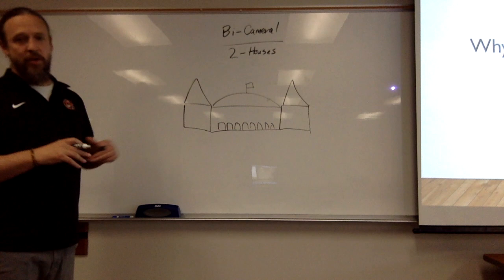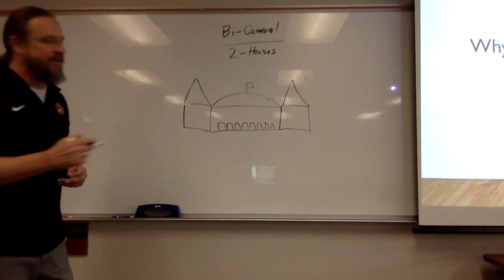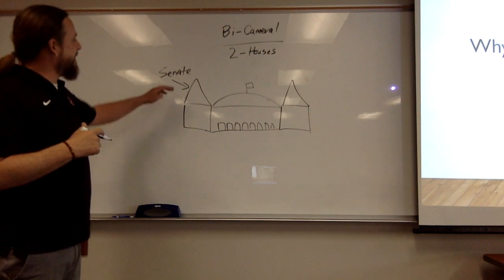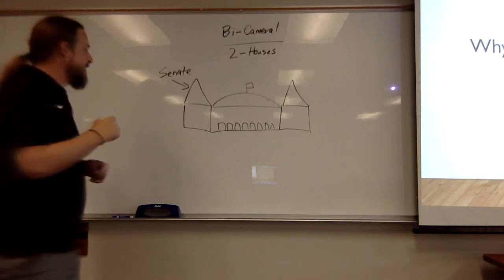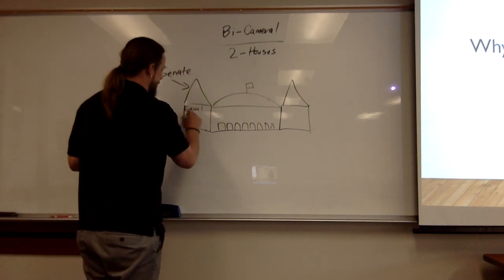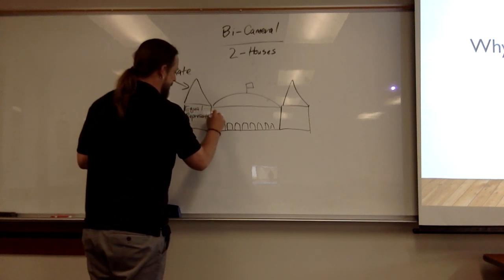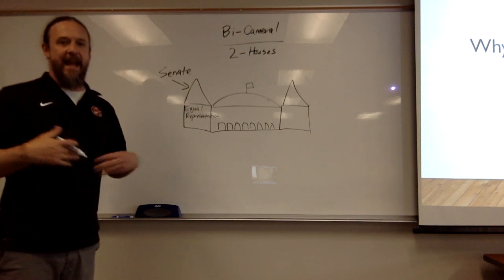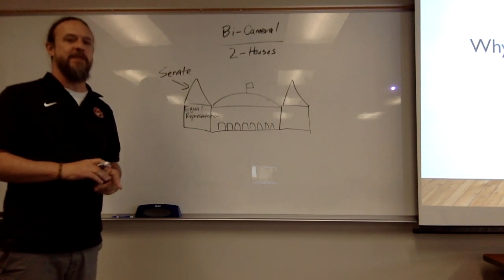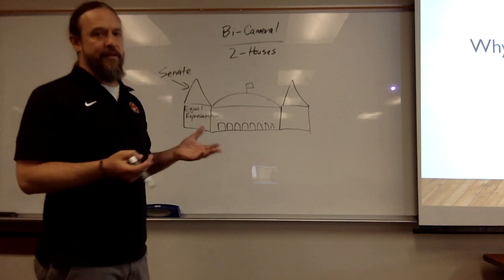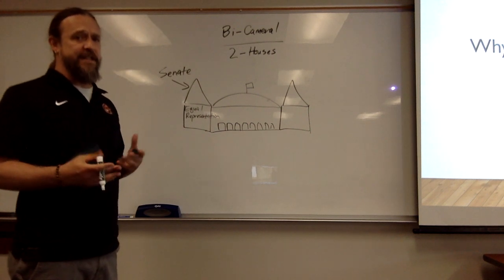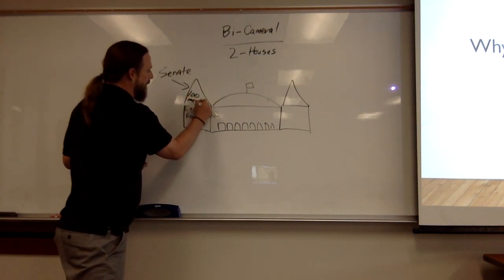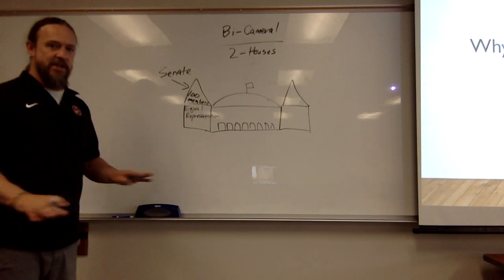On one side, so we've got a two-house representation. On one side, we're going to have something that's called the Senate. Make sure we write that down. In the Senate, they're going to use a system called equal representation. As the name would imply, equal representation means that on the Senate side, every state is going to have the exact same number of representatives. How many states does the United States have? The answer is 50. There are 50 states. 50 times two is 100. So we know there are 100 members in the Senate, because it's based on equal representation — everyone gets two.